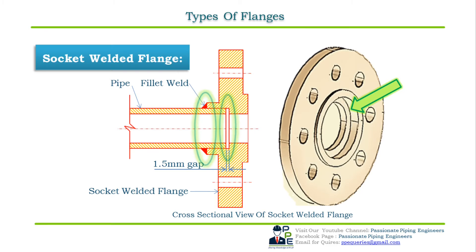Socket welded flanges are used for small bore pipes up to 2 inch NPS, but can be used up to 4 inch NPS per ASME B16.5 or client requirements. They are used in high pressure piping that does not transfer corrosive fluid — because they can be subjected to corrosion in the 1.5 mm gap between the pipe end and the socket shoulder. Although similar to slip-on flanges in static strength, the fatigue strength of socket welded flanges is 50% greater than that of double welded slip-on flanges.